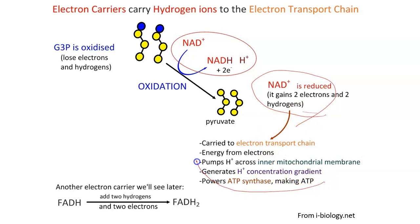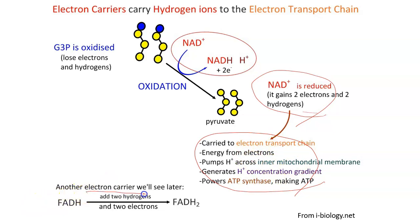The NADH produced here will be used in the electron transport chain, which we will talk about later when discussing aerobic respiration — that explains what happens to NADH in the future. There is also another electron carrier called FADH₂, which we will cover later as well.